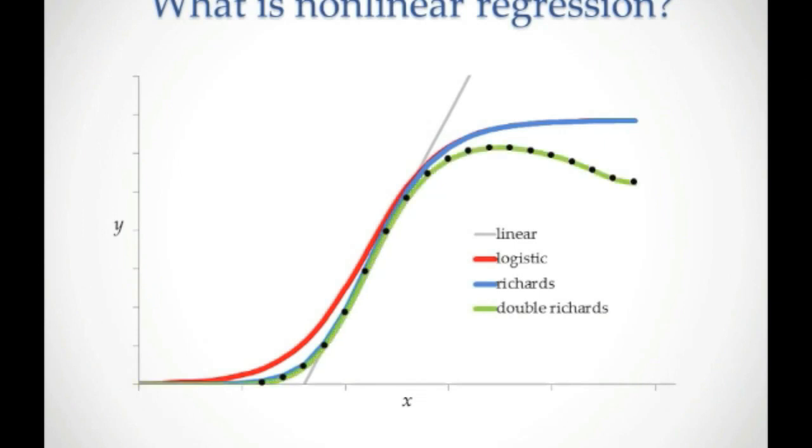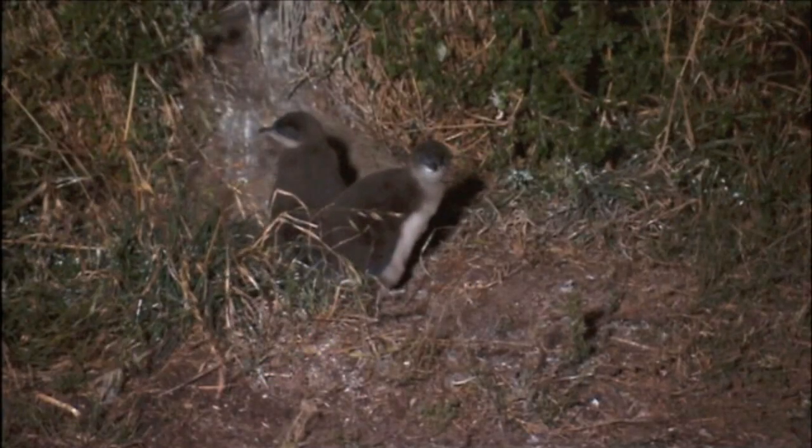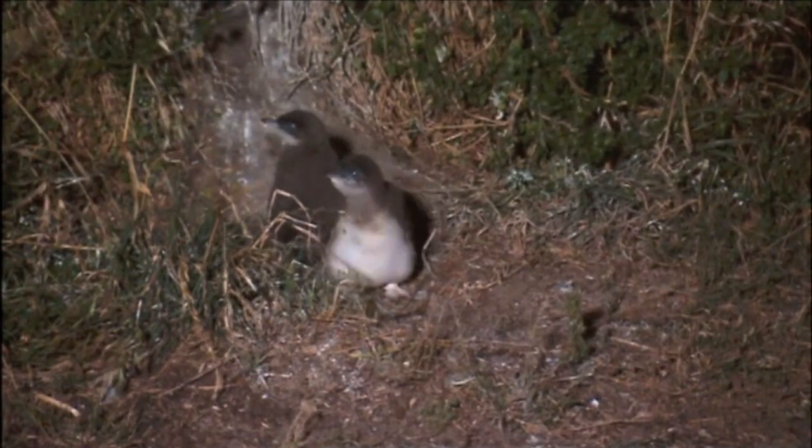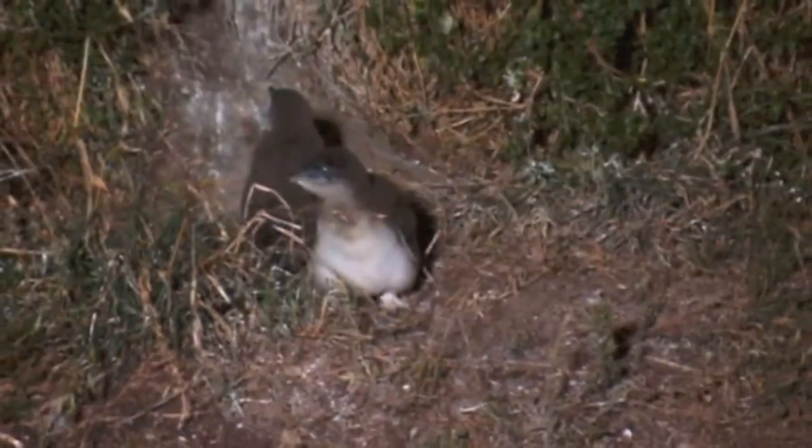Seabird chicks have a non-linear growth, a linear phase followed by a drop in body mass before fledging. This drop is a very important indicator of forage conditions.